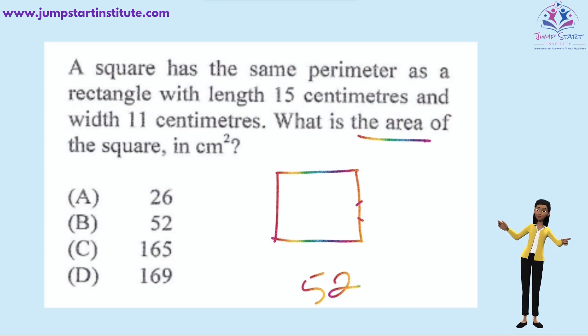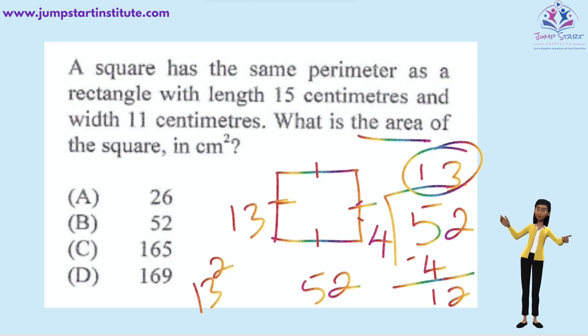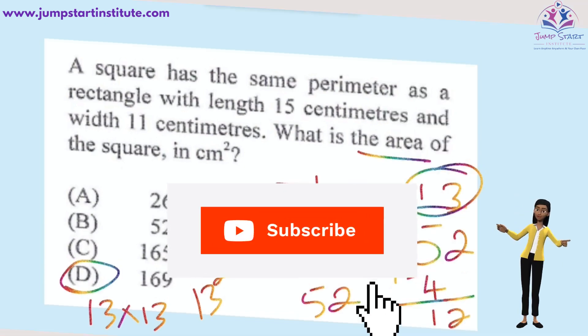Because all four sides of the square has the same length, we simply say 52 divided by 4. And that gives us 4 into 5, that goes once. And 4 into 12, that goes 3 times. Therefore, each side measures 13 centimeters. To calculate the area, we simply say 13 squared or 13 times 13, which is 169. Therefore, the answer is D, 169.